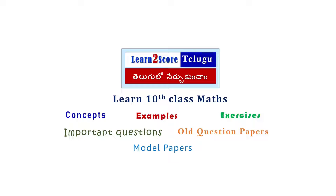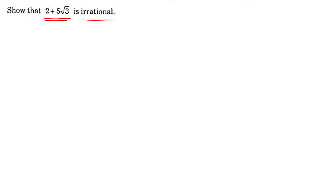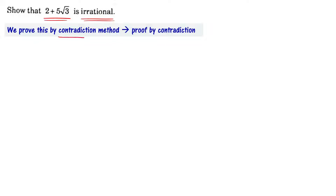Welcome to our channel, Learn to Score Telegroup. Let us now show that 2 plus 5 root 3 is an irrational number. We will prove this by the contradiction method.